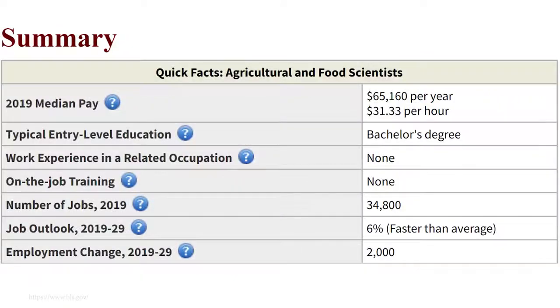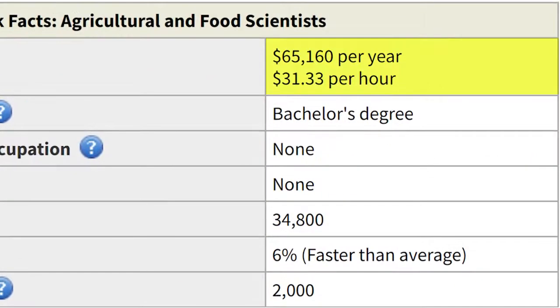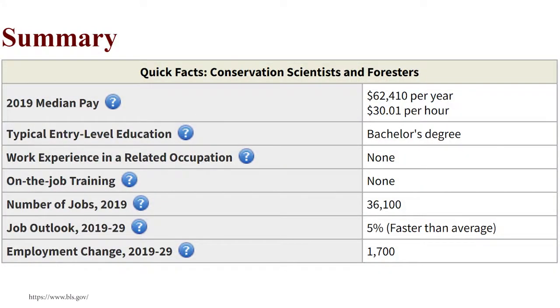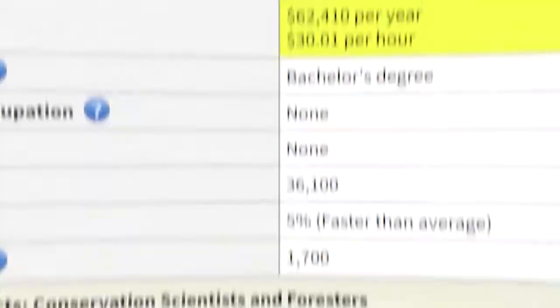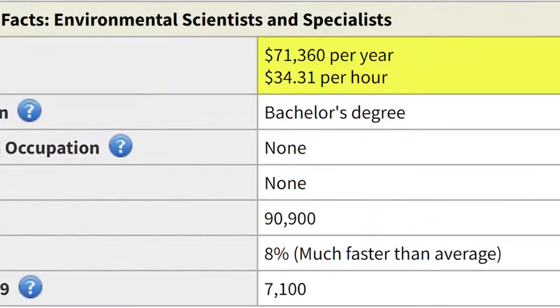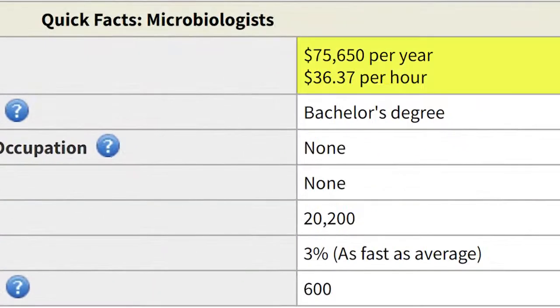As an agricultural and food scientist, you're going to make around $65,000 a year. You might become a forester or a conservation scientist, and they make around $62,000 a year. Environmental scientists make around $71,000. And microbiologists make around $75,000, although that might be a little bit more rare of a career path for you to go down.